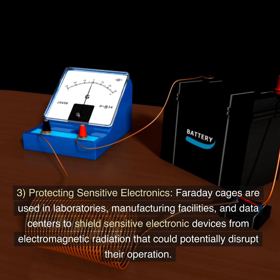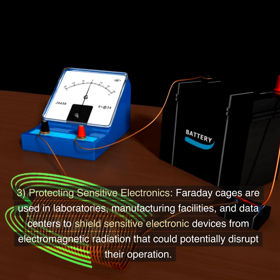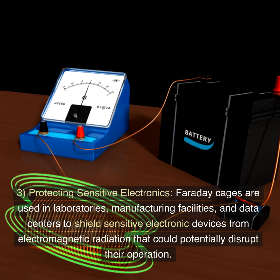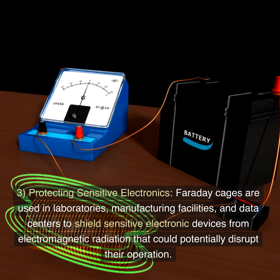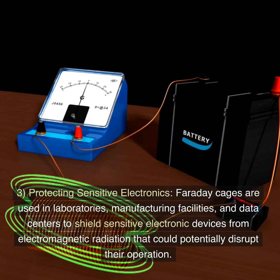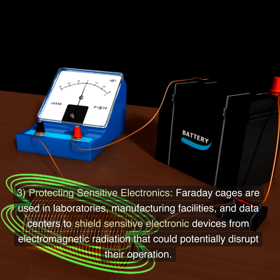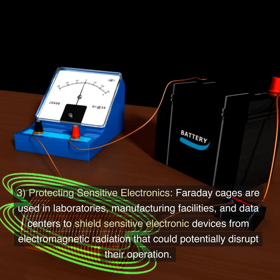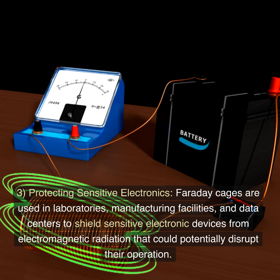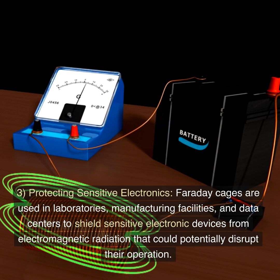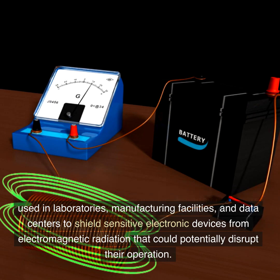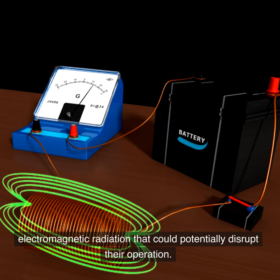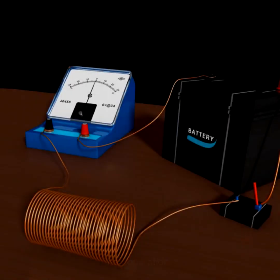Protecting sensitive electronics: Faraday cages are used in laboratories, manufacturing facilities, and data centers to shield sensitive electronic devices from electromagnetic radiation that could potentially disrupt their operation.